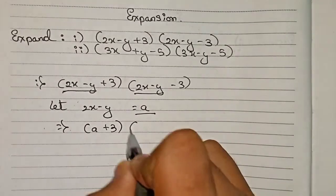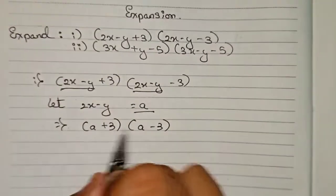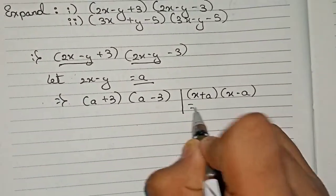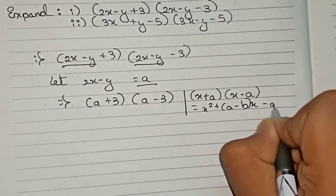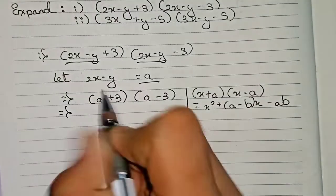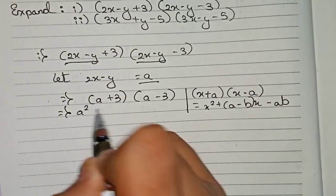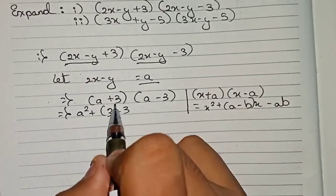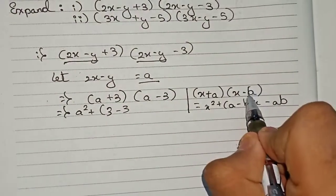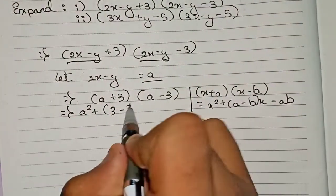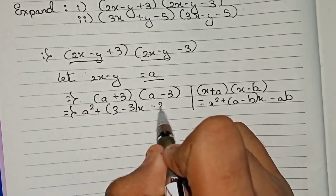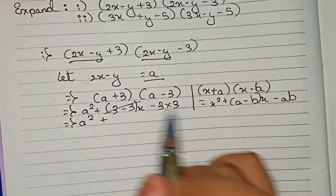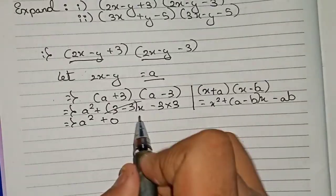So it becomes (a plus 3) multiplied by (a minus 3). For this we use the identity: (x plus a)(x minus a) equals x squared minus a squared. Applying this: a squared, then plus (3 minus 3) times x, which equals 0, and then minus (3 into 3) which is 9. So we get a squared minus 9.